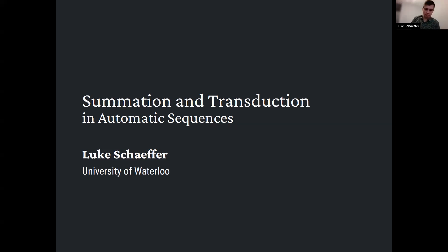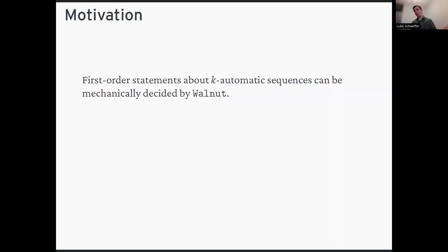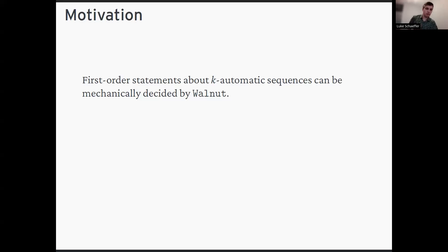Thanks for inviting me. This talk is on summation and transduction, and the motivation was based in large part on Walnut — a software package created by Jeffrey Shallit and his students. It decides first-order statements about k-automatic sequences. If you can write a question in first-order logic and feed it into the software, it will confirm or refute the conjecture, often quite quickly — in seconds or minutes.